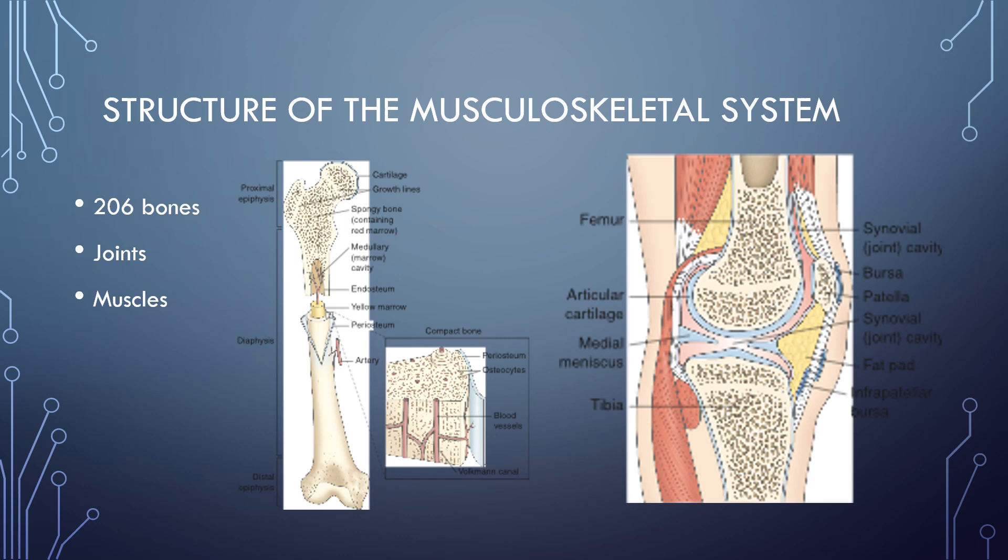Our musculoskeletal system also contains joints. We have several types of joints: immovable joints, limited movement joints, and freely movable joints. There are five types of freely movable joints: ball and socket, hinge, saddle, pivot, and gliding joints.